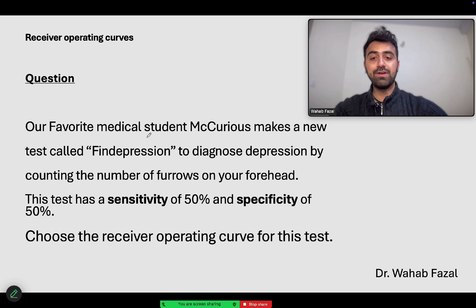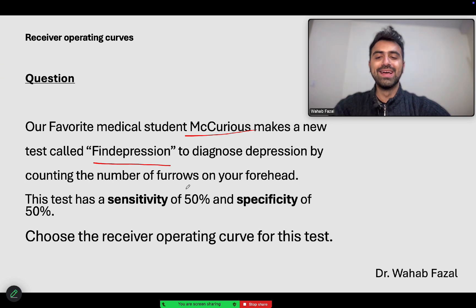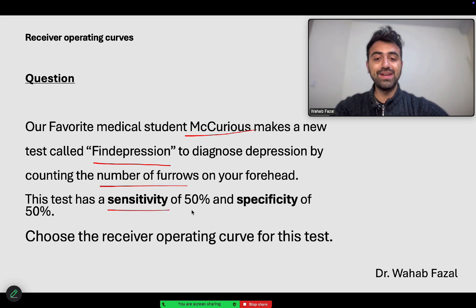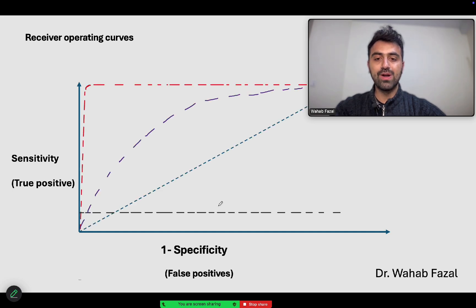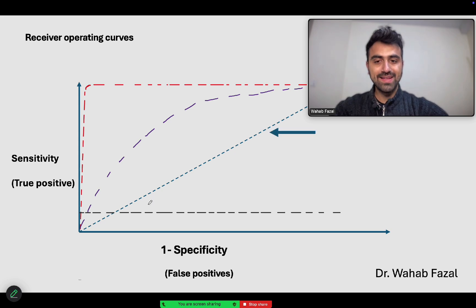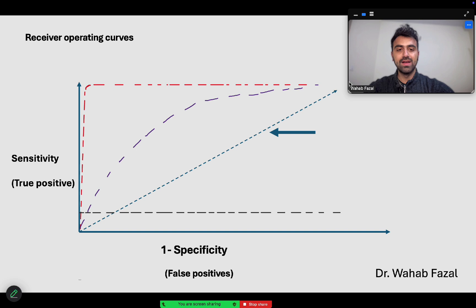Our favorite medical student Mercurius makes a new test called 'Find Depression' to diagnose depression by counting the number of furrows on a person's head. This test has a sensitivity of 50% and a specificity of 50%. If you plot this on a receiver operating curve — sensitivity on the y-axis and 1-minus-specificity on the x-axis — the correct answer is the diagonal line right in the middle of the graph, representing an area under the curve of 0.5.